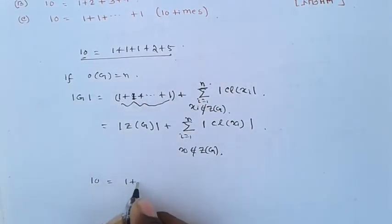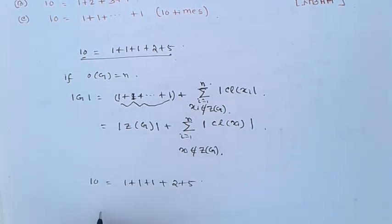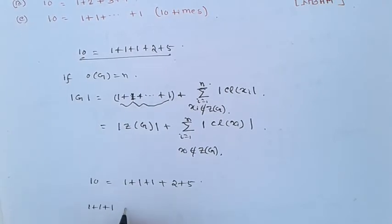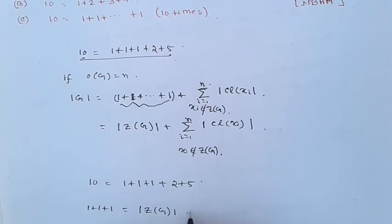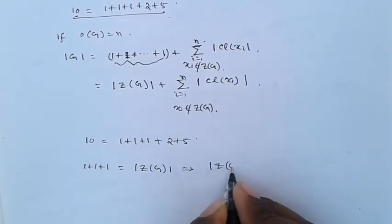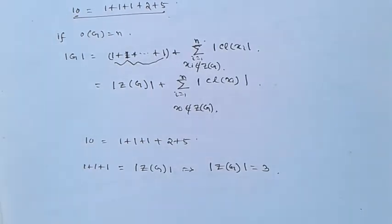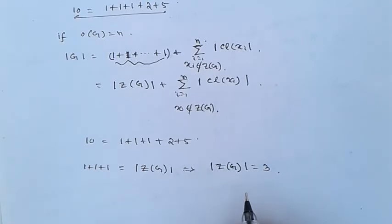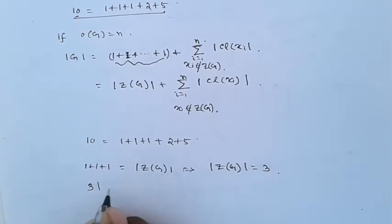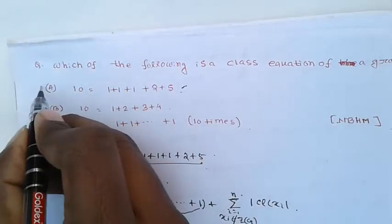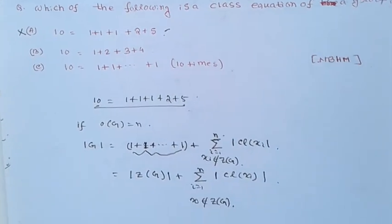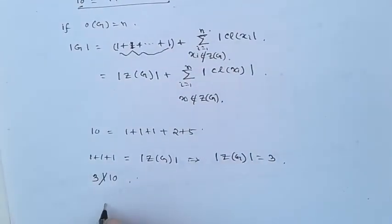Checking the first option: 10 = 1 + 1 + 1 + 2 + 5. Here, 1 + 1 + 1 equals the order of Z(G), implying order of Z(G) equals 3. But by Lagrange's theorem, the order of Z(G) must divide the order of G, meaning 3 must divide 10. Since 3 does not divide 10, this is not possible, so the first option is not a valid class equation.